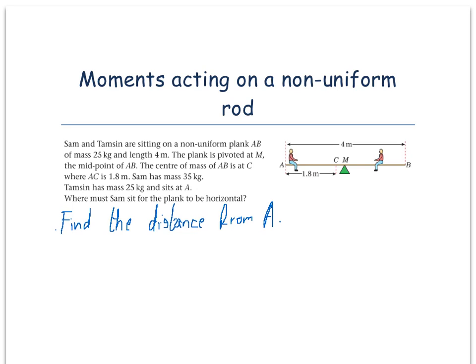Tanzim has mass 25 kg and sits at A. Where must Sam sit for the plank to be horizontal? Find the distance from A.